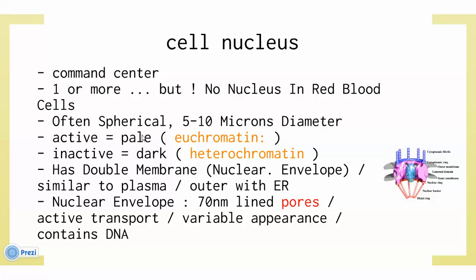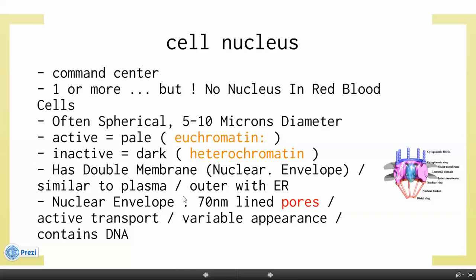When the nucleus is active, it looks pale — this is called euchromatin. When inactive, it looks dark — this is called heterochromatin. The nucleus has a double membrane called the nuclear envelope, similar to the plasma membrane. The outer envelope is continuous with the endoplasmic reticulum. The nuclear envelope is about 70 nanometers and is lined with pores. It works like active transport and contains DNA.